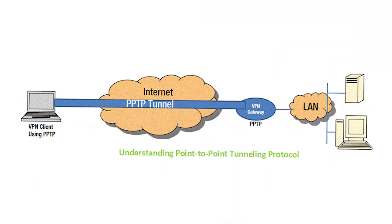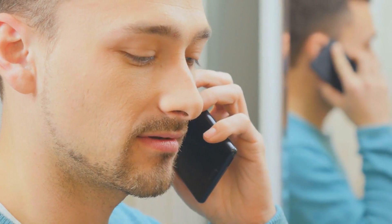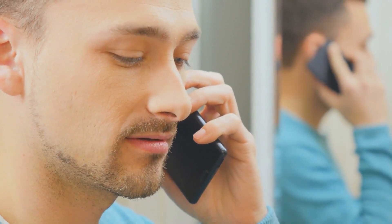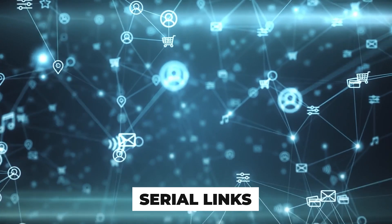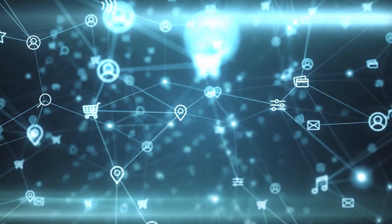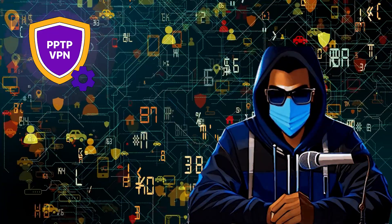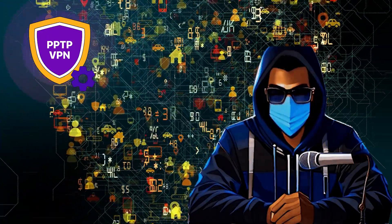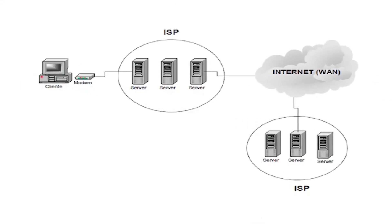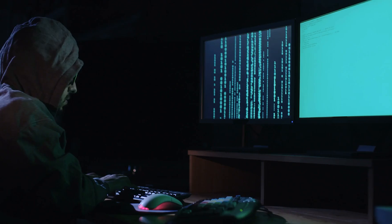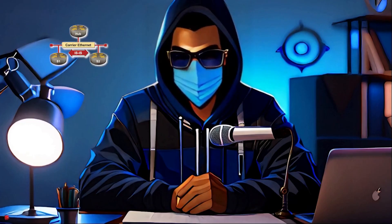Then there's PPP — the Point-to-Point Protocol. It's like a private conversation between two friends on a tin-can telephone line, used for direct connections over serial links, but doesn't offer much security on its own. PPPoE combines PPP with Ethernet, allowing that tin-can conversation to happen over a larger network, commonly used by ISPs for customer internet connections — but if not secured, it can be tapped into by eavesdroppers.